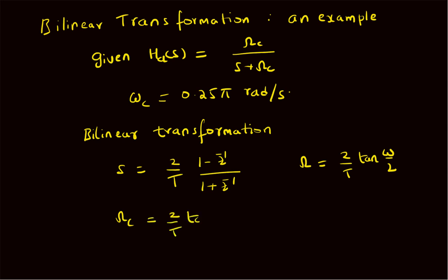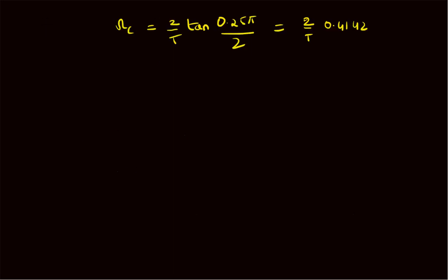The cutoff frequency for the analog filter will be Ωc = (2/T) × tan(ωc / 2), where ωc from the digital filter is given as 0.25π. So this equals (2/T) × 0.4142, that is tan(0.125π) or tan(π/8). That is the value of the analog cutoff frequency.